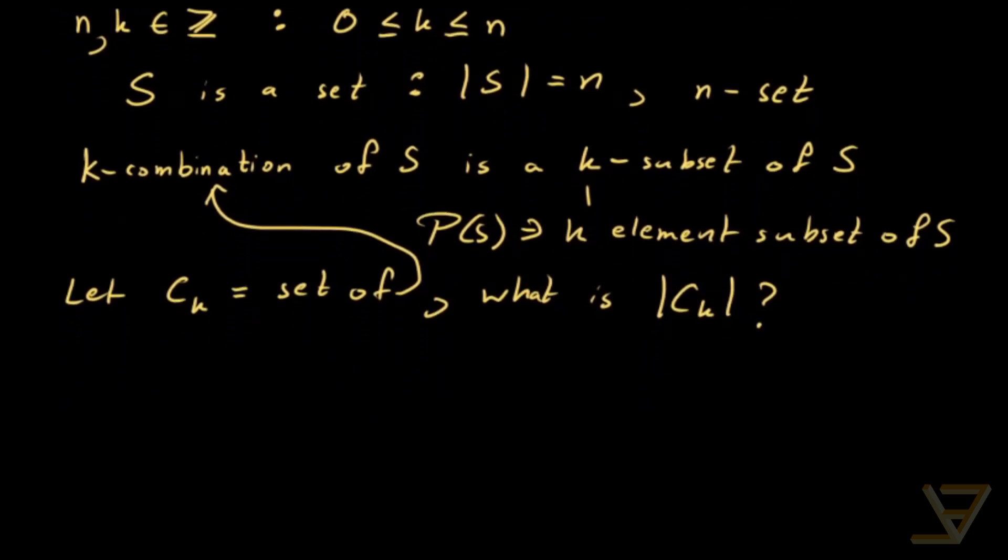We might not know right off the top of our heads what to do, but we can tackle, first of all, an easy case. Let's say k equals zero. Then we're selecting zero elements, which means the only element of C_0 is the empty set. So that means the cardinality of C_0 is equal to one.